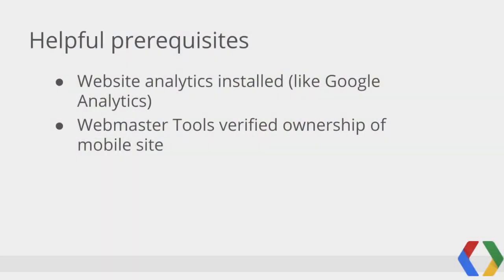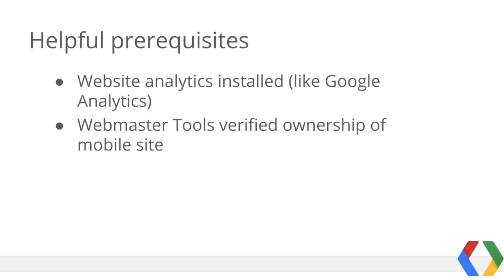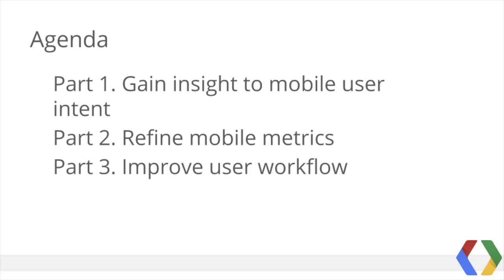That's exactly why we should discuss optimizing the top mobile tasks on your site. Helpful prerequisites for this video include web analytics — I'll be using Google Analytics — as well as Webmaster Tools verified ownership of your mobile site. If you publish mobile content on a separate URL from desktop, such as on a subdomain, be sure the m.site is verified. To optimize mobile task completion, we first need to gain insight to mobile user intent, then refine our mobile metrics, and last, improve user workflow.